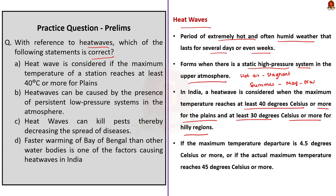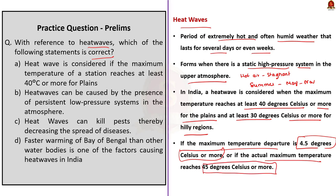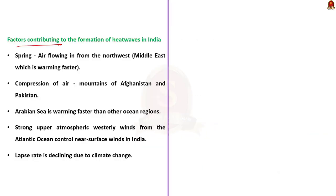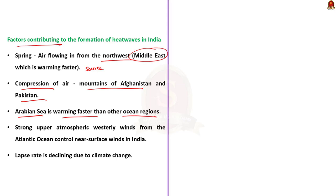There are different criteria for defining a heat wave, including departure from normal temperature and actual maximum temperatures. A heat wave can be declared if the maximum temperature departure is 4.5°C or more, or if the actual maximum temperature reaches 45°C or more. Several factors contribute to heat wave formation in India. In spring, India experiences air flowing in from the northwest. The Middle East, which is warming faster due to climate change, serves as a source of warm air moving into India. Air from the northwest also passes over the mountains of Afghanistan and Pakistan, causing compression and bringing warm air to India. The Arabian Sea is also warming faster than other ocean regions, contributing to heat waves.